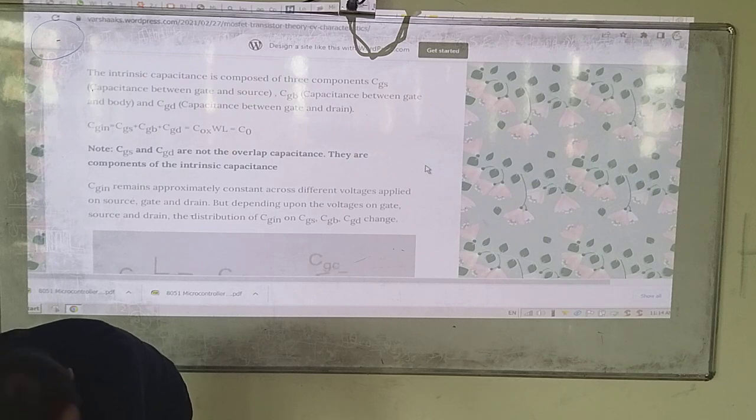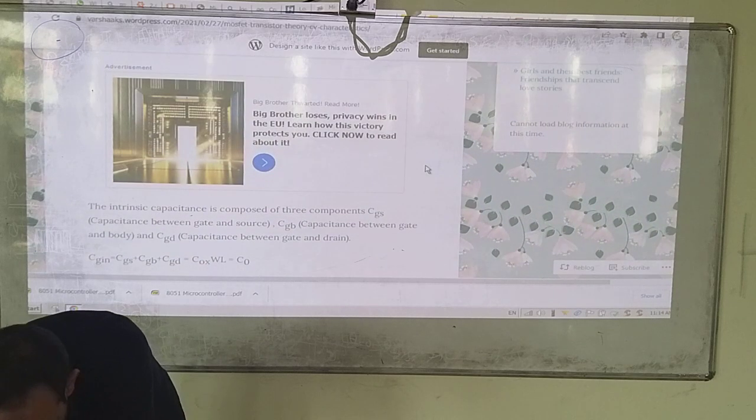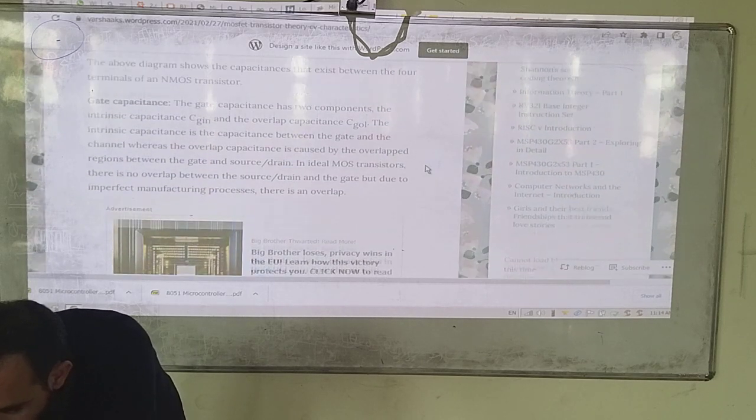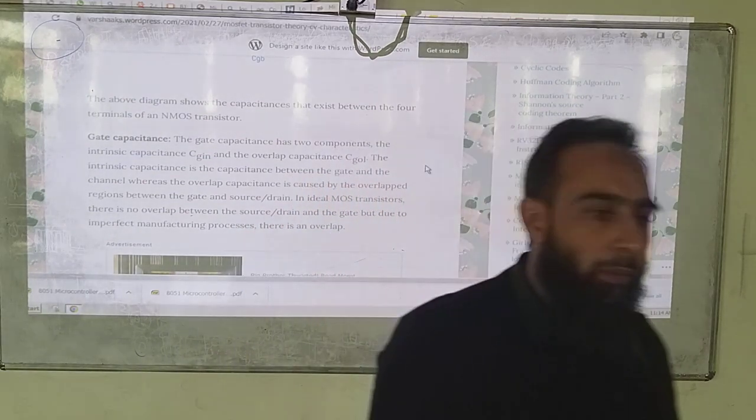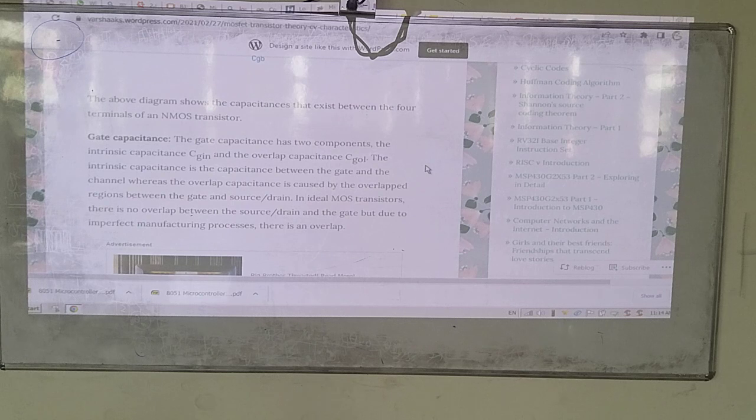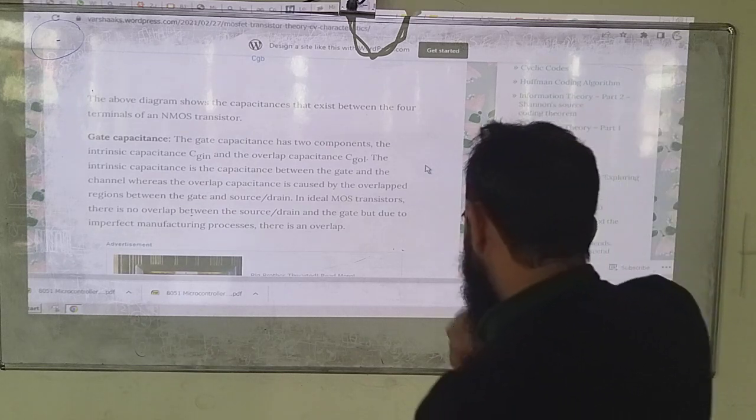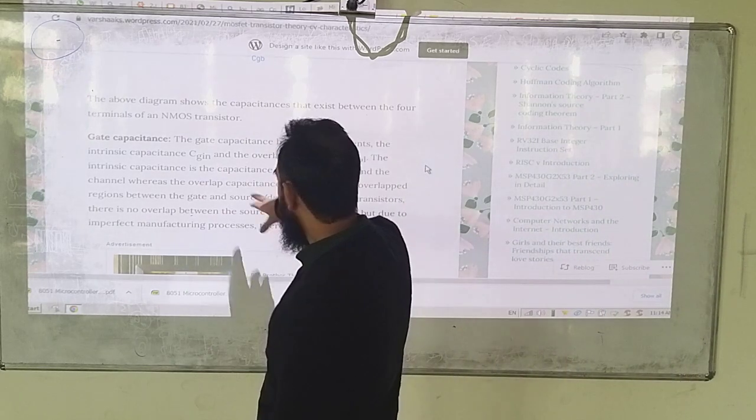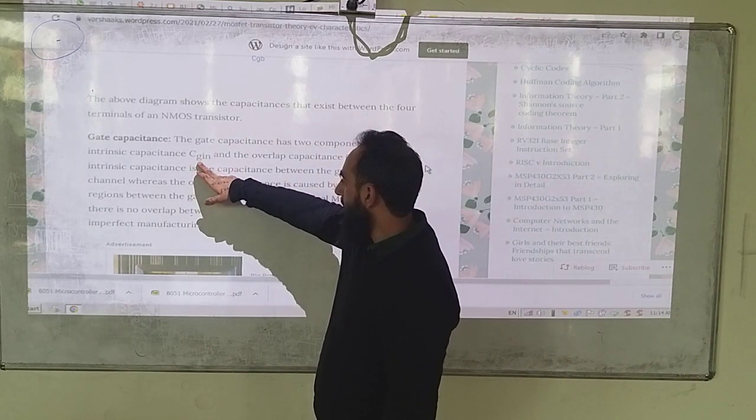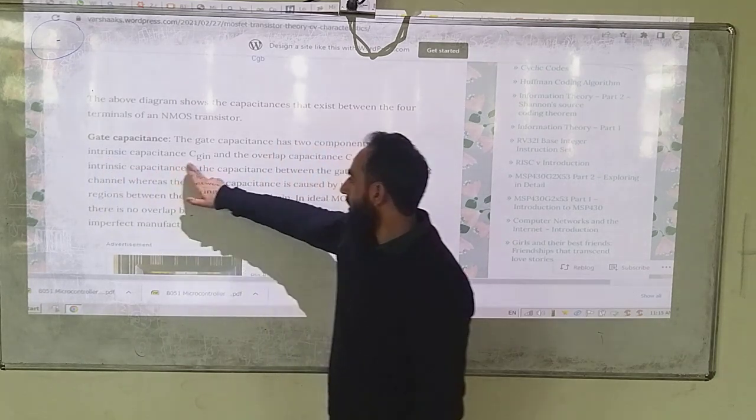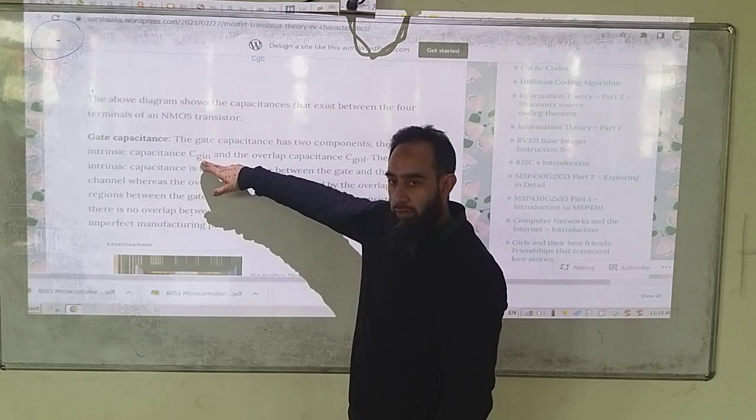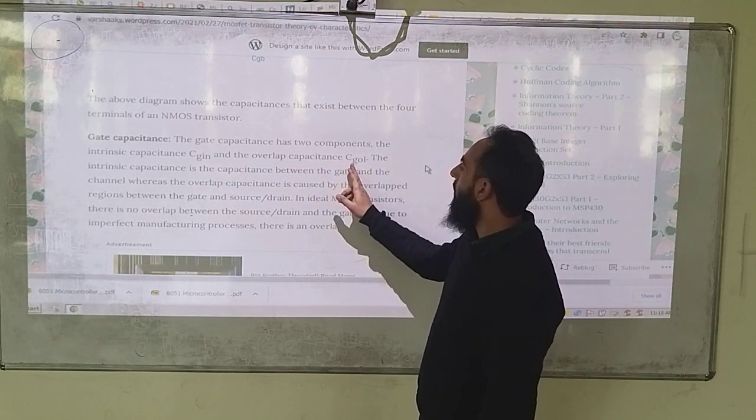Now, gate capacitance exists in terms of two main components. Gate capacitance has two main components: Cgin, the intrinsic capacitance, gate to intrinsic capacitance, and overlapping capacitance, Cgol.